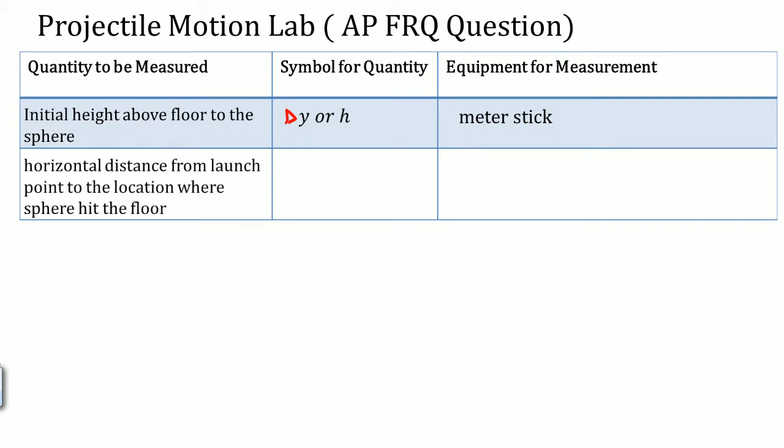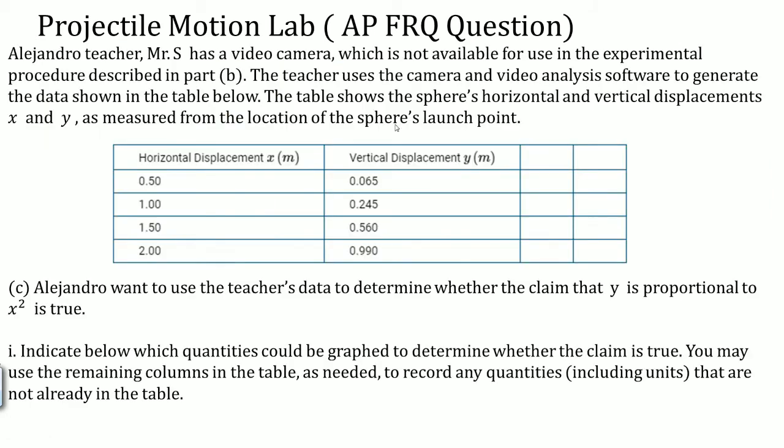Also, you want the horizontal distance from the launch point to the location where the sphere hits the ground. That can be Δx or D, which stands for distance. That can also be measured by the meter stick. Notice that these qualities, symbols, and equipment all come from the data because it actually told us.